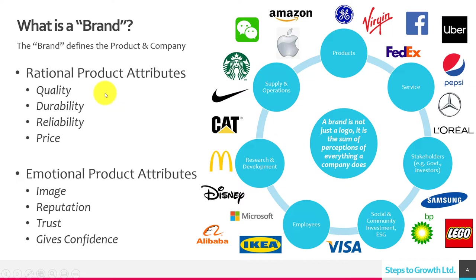On a technical level, it can be broken out into rational product or service attributes. If it's a product, you can look, feel, and touch it. What is the quality, the durability, the reliability associated with the product, and what is the price? Even the price alone gives you perceptions — low price versus high or premium price tells you something about the brand. Then there are emotional product attributes: what is the image of the brand, the reputation, the trust, and the confidence it gives you?